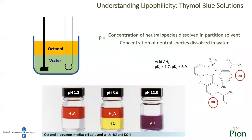Coming back to the case of thymol blue: the neutral species with the red color is extracted into the octanol layer. However, the other two species — the monoanionic with yellow color and the dianionic with blue — stay in the water layer when the pH increases as they are charged. In other words, the aqueous media simulates the bloodstream, and the organic phase, the octanol, simulates the membranes. The neutral species is the one which will be able to go through the tissue, whereas the ionized species will not be absorbed effectively and will stay in the bloodstream.